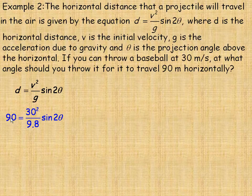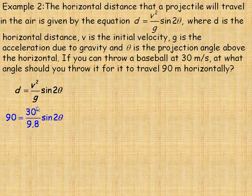We're going to throw it 90 meters. Initial velocity is 30 meters per second. G is 9.8 meters per second squared on the planet Earth. And we're asked to solve for theta.